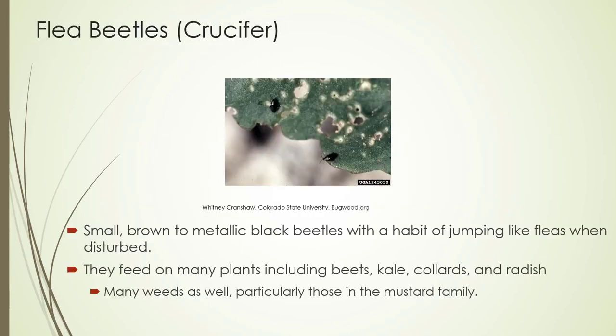Flea beetles — there are a lot of different flea beetles. I'm going to focus on crucifer flea beetles, which go for the mustard plant. They're small brown-black beetles that actually jump like fleas, which is why they're called flea beetles. They feed on a lot of different plants, mostly in the mustard family. It's important when managing these to note there are a lot of weeds in the mustard family that could be harboring them.